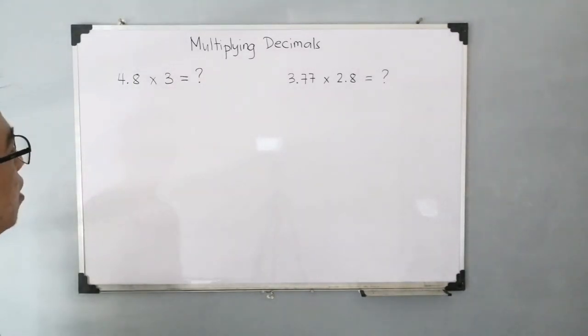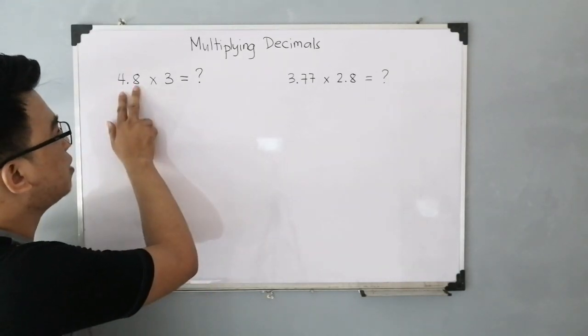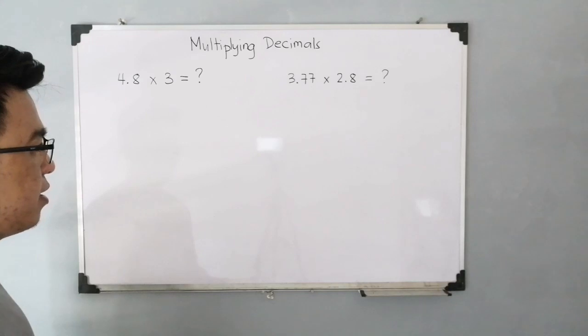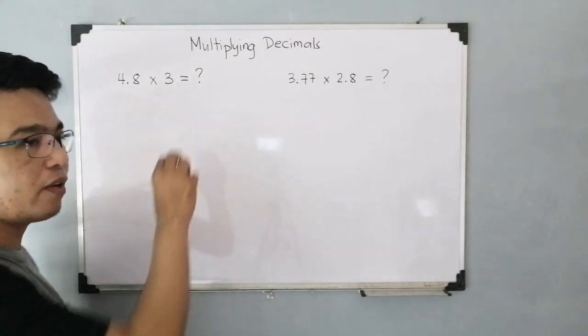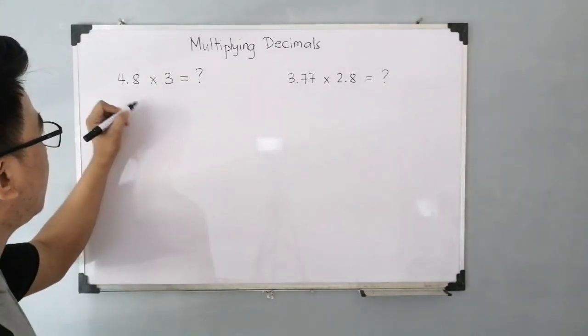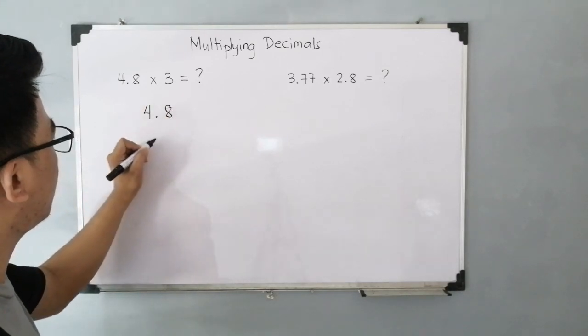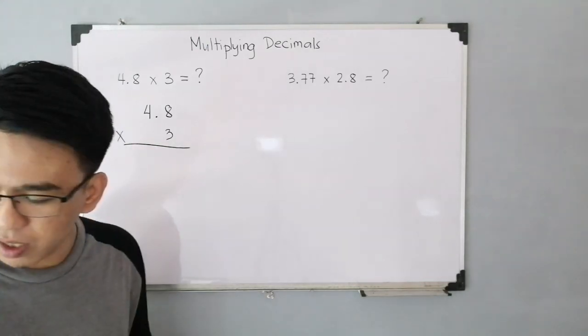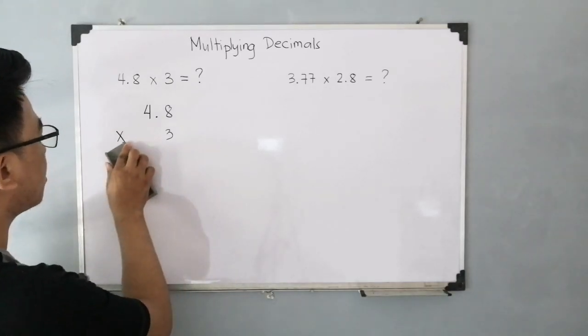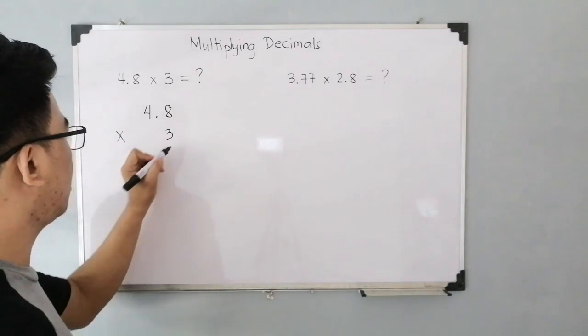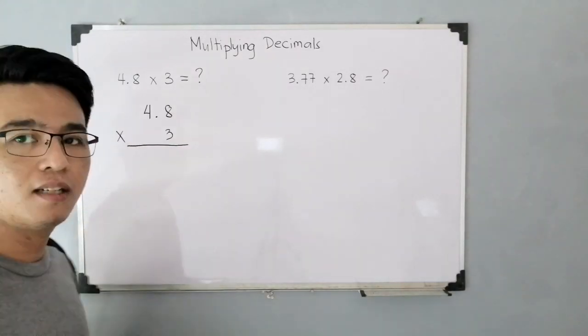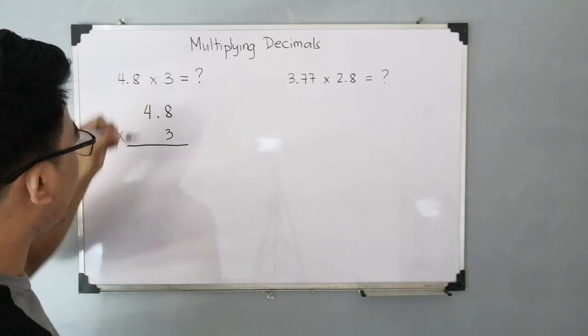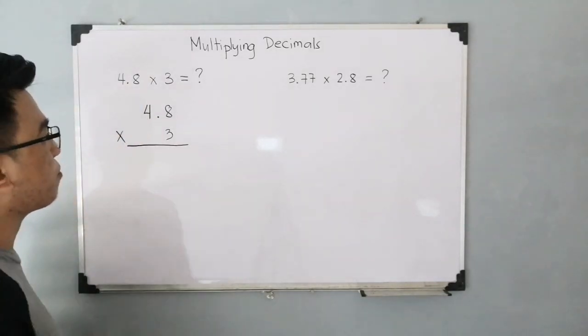We have here a given decimal and a whole number. This is our first setup. A decimal multiplied by a whole number. We have 4.8 times 3. So, how do we do the step-by-step process? As you can see, this one is horizontally aligned. What we will do is align this vertically. So you have your 4.8 times 3. What I can advise you here or the technique you should think about is you need to ignore first the decimal point. Just multiply ignoring the decimal. Ignore the decimal point and think that you're just multiplying whole numbers. For example, think of it as just 48 times 3. Ignore the decimal point.